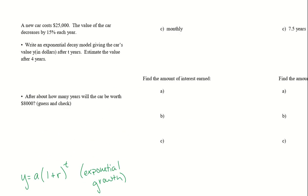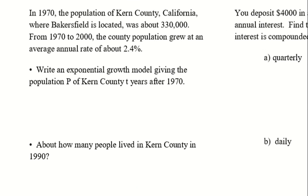So let's go ahead and try a couple of these examples. The first one: in 1970, the population of Kern County, California, where Bakersfield is located, was about 330,000. From 1970 to 2000, the county population grew at an average annual rate of about 2.4%. Write an exponential growth model giving the population p of Kern County t years after 1970. So we have our equation y equals a times 1 plus r to the power of t. Since the population is growing, we know it's going to be the plus. So a is our initial value — 330,000.